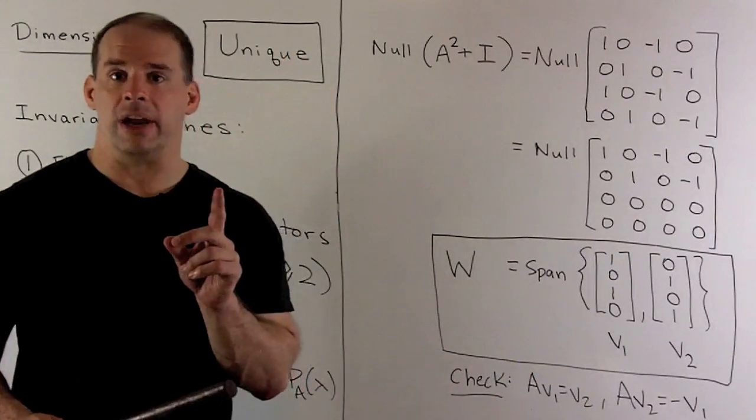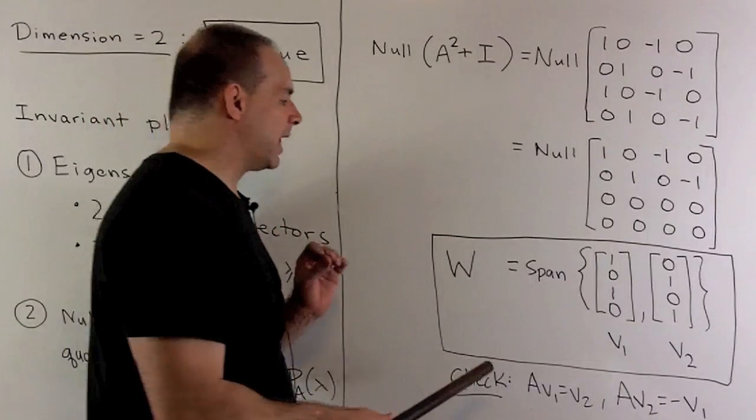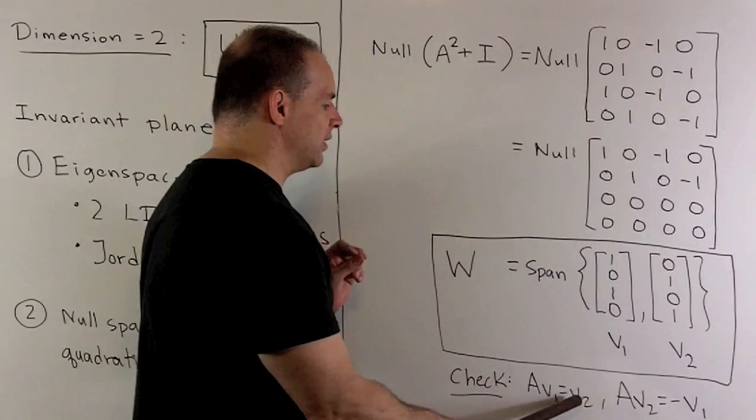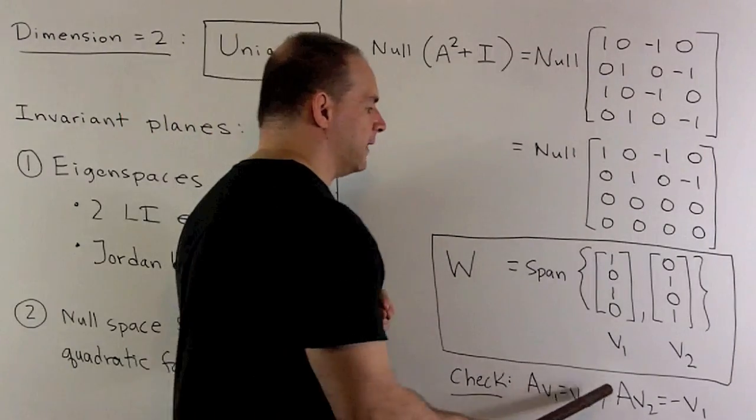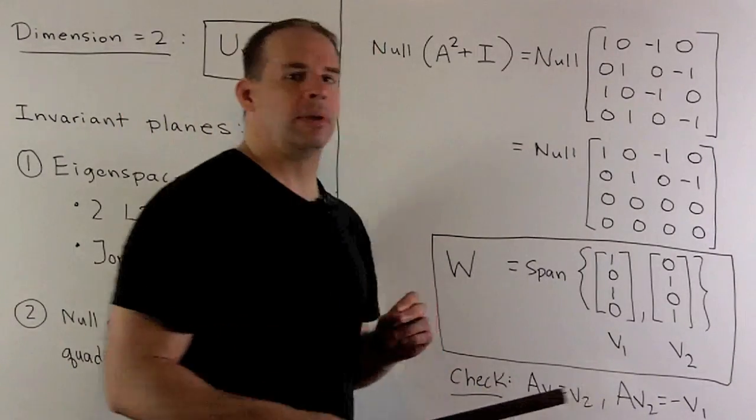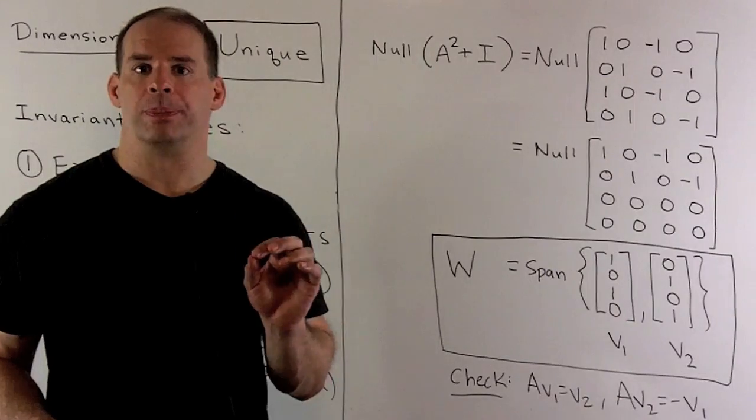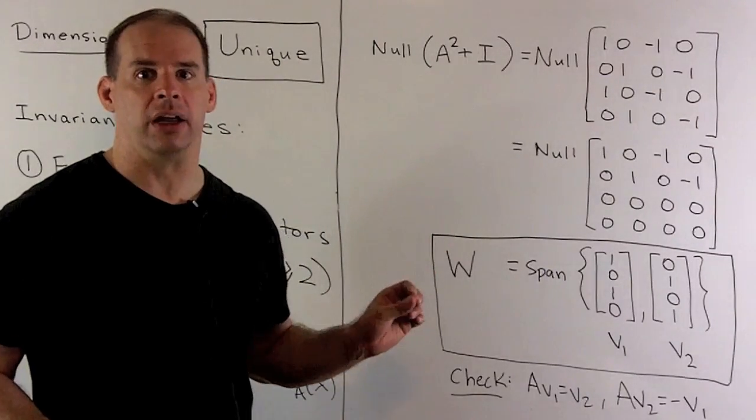To see invariant, we just check. If I apply A to V₁, we get V₂. So, that's good. We're winding up back in W. If I take A of V₂, we get minus V₁. And again, we wind up back in W. So, this plane is, in fact, invariant.